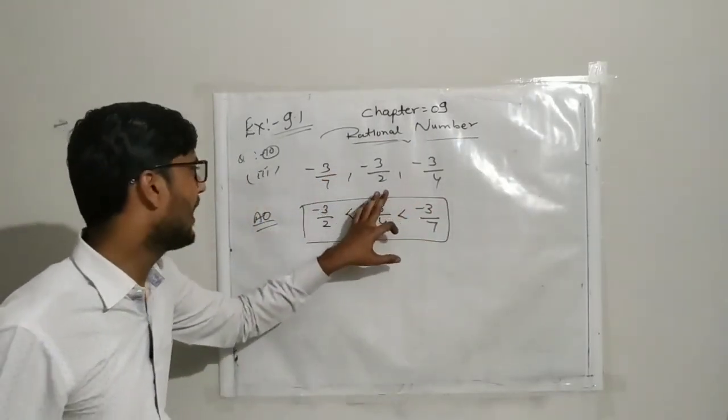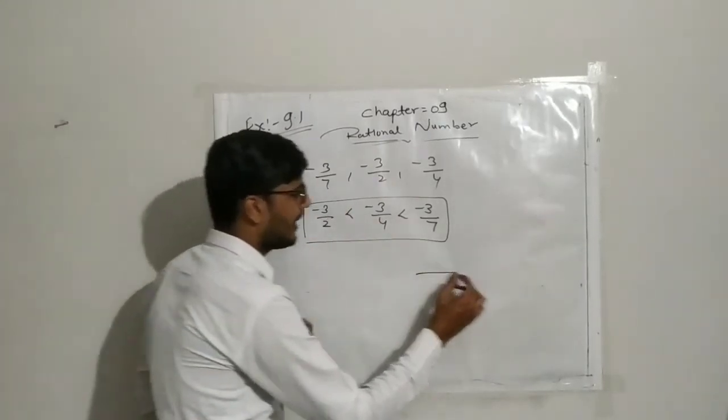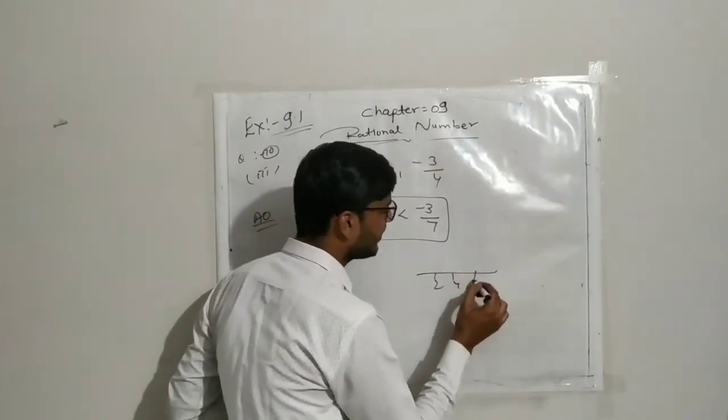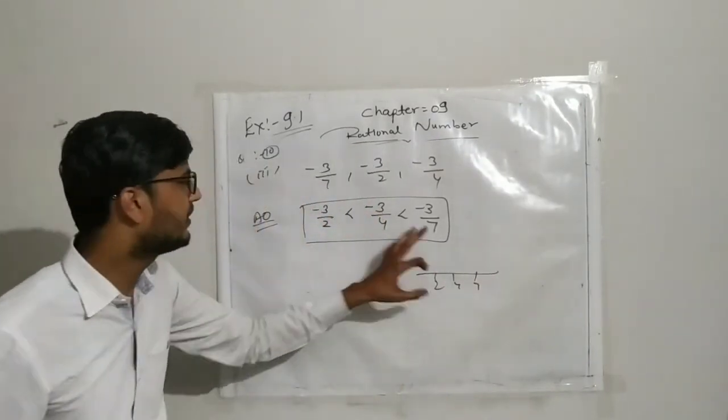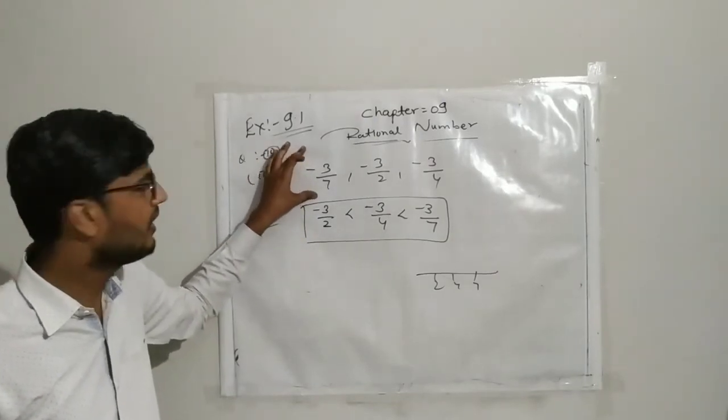Here the numerator is the same, so we write only 2, 4, and 7. Because we know on the number line for ascending order, 2 is less than 4, then 7. So 2, 4, and 7 - this is the ascending order of the given rational numbers.